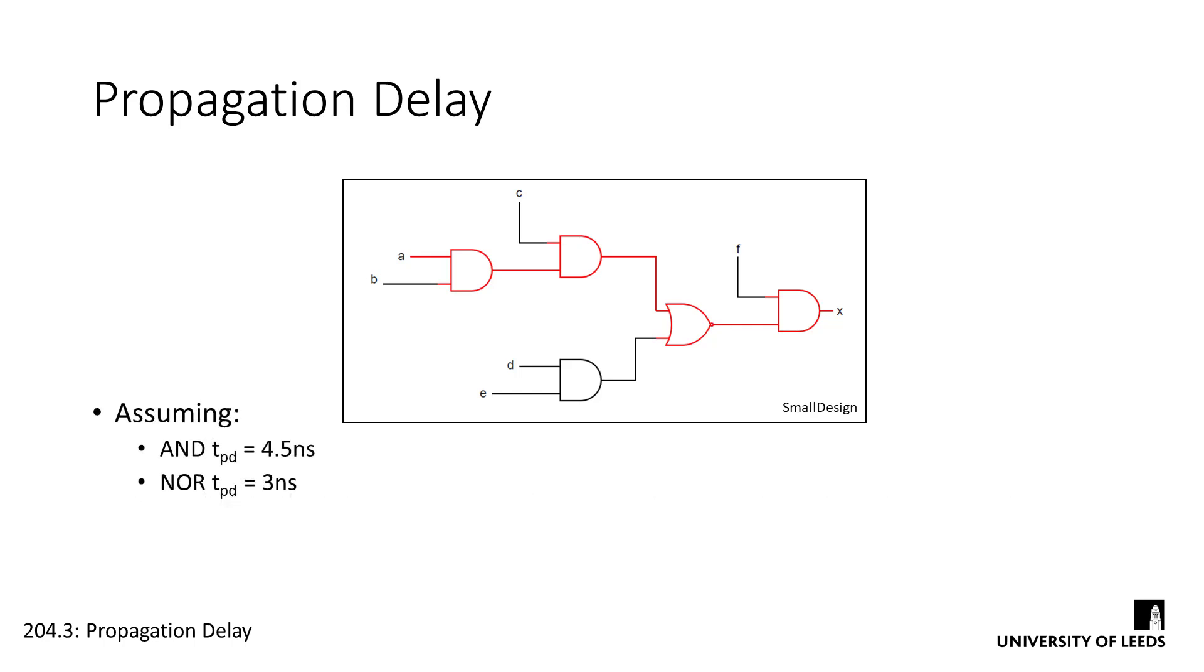Let's assume some arbitrary delay times for the circuits, say 4.5 nanoseconds for an AND gate and 3 nanoseconds for a NOR gate. We can see that the signal flows through two AND gates, a NOR gate and then a final AND gate. So this path's delay time would be 4.5 plus 4.5 plus 3 plus 4.5 or 16.5 nanoseconds. We can see from this example how quickly propagation delay can stack up with just a few simple gates.